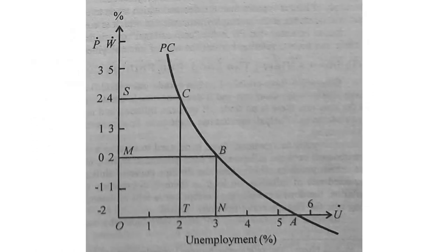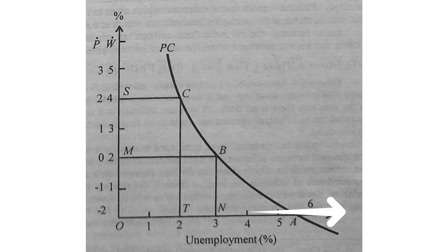Now, let's take a look at the diagram. On the x-axis, we have the rate of unemployment. On the y-axis, we have the money wage rates and the inflation rates. w represents the money wage rate and p represents the inflation rate. Now, let's take a look at the relationship between the unemployment and the money wage rate.